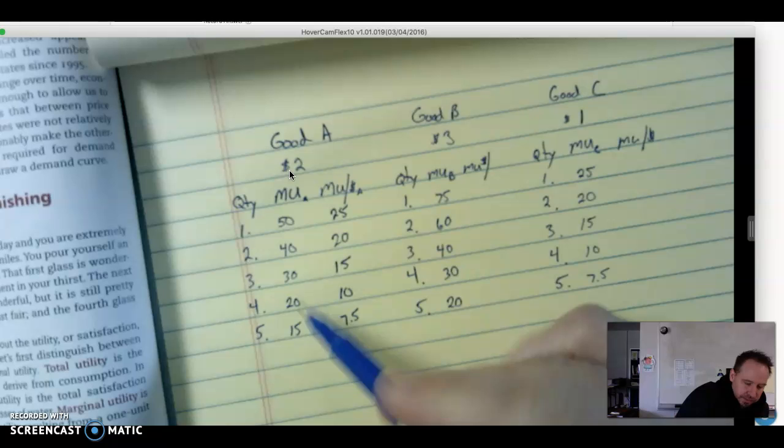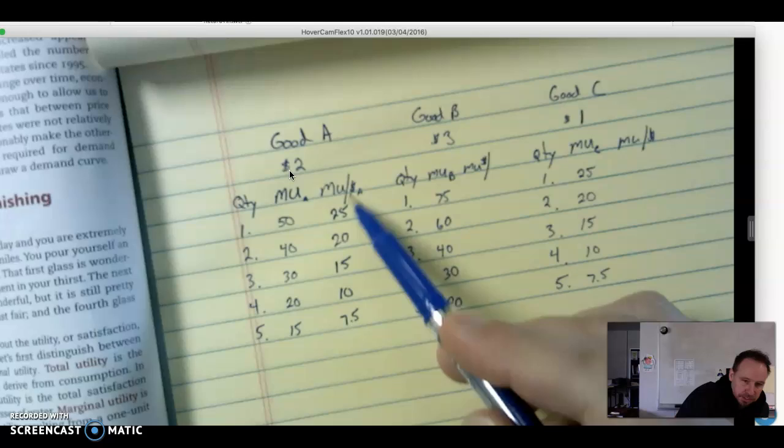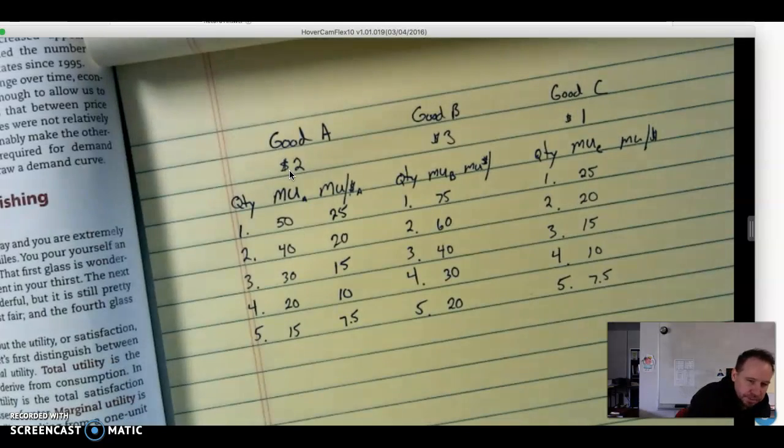40 divided by 2 is 20, 15, 10, and 7.5. So we're just taking the marginal utility and dividing it by the price, which gives us the marginal utility per dollar.